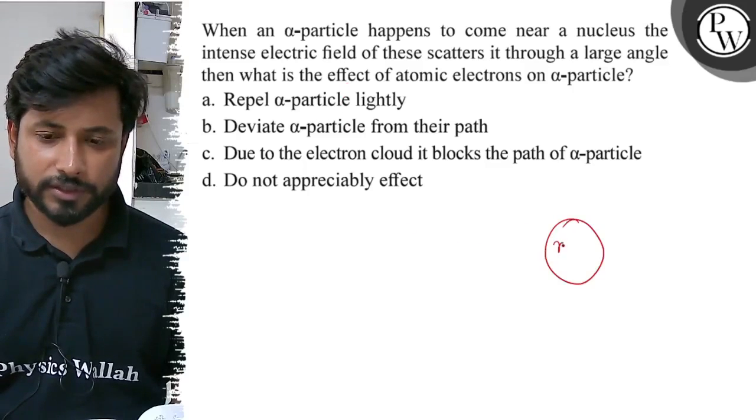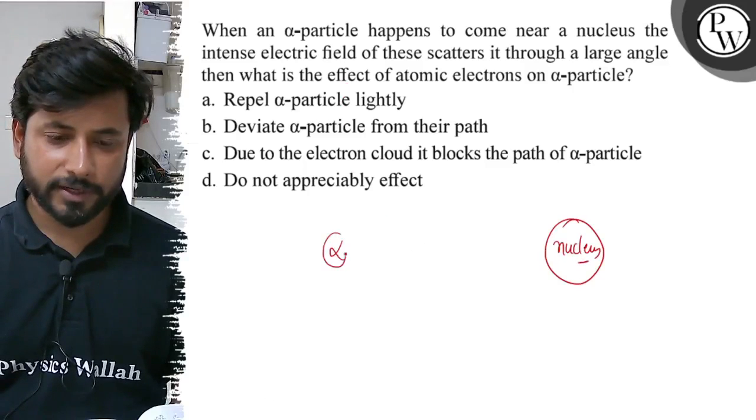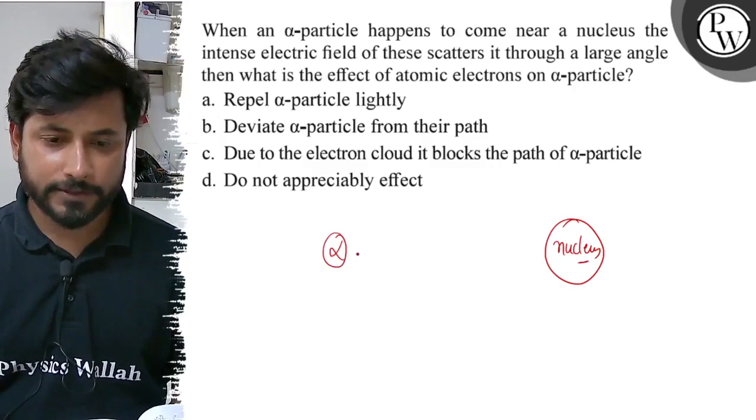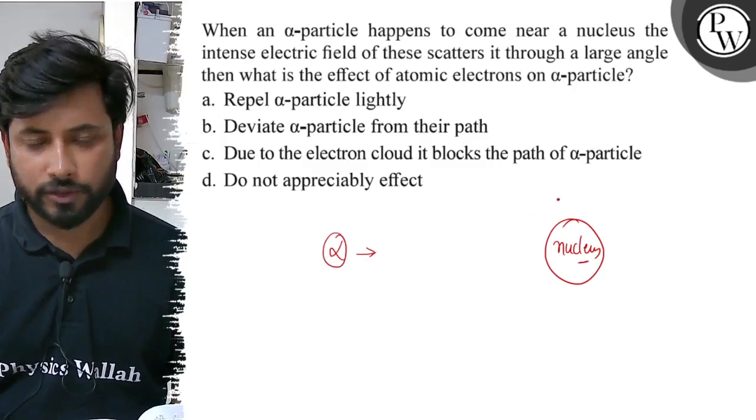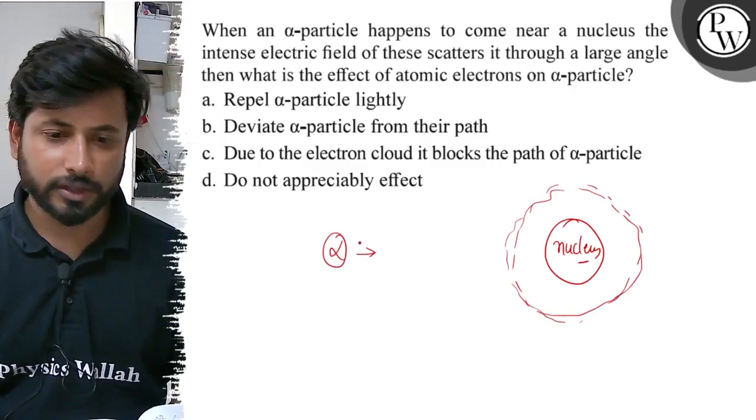This is a nucleus, and here is an alpha particle. Around the nucleus there are electron clouds. The electron clouds surround the nucleus.